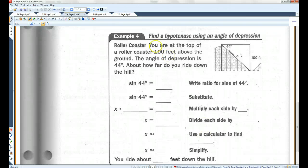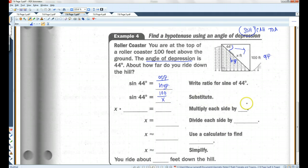Example 4. You are at the top of a roller coaster 100 feet above the ground. The angle of depression, that was one of our vocab, is 44 degrees. That's this angle here. About how far do you ride down the hill? So once again, this is the opposite side, and this is the hypotenuse. Opposite hypotenuse, think SOHCAHTOA. Again, we're going to use sine. So sine of 44 degrees, opposite over hypotenuse. The opposite side is 100, the hypotenuse is x. I'm going to multiply each side by x. So I have x times sine of 44 degrees equals 100. I'm going to divide each side by sine of 44 degrees.